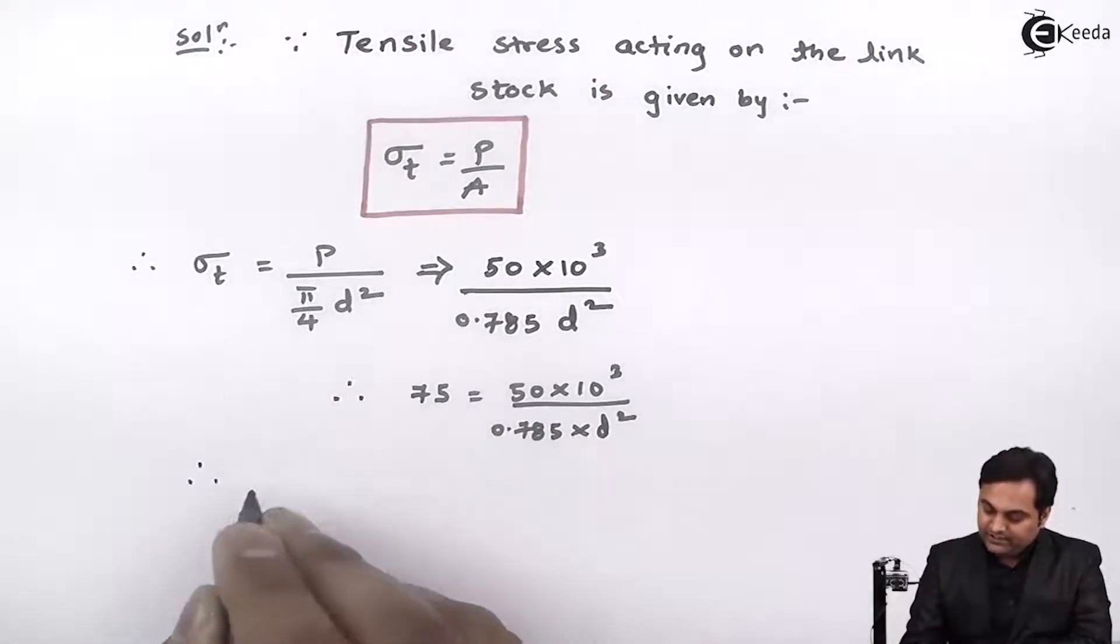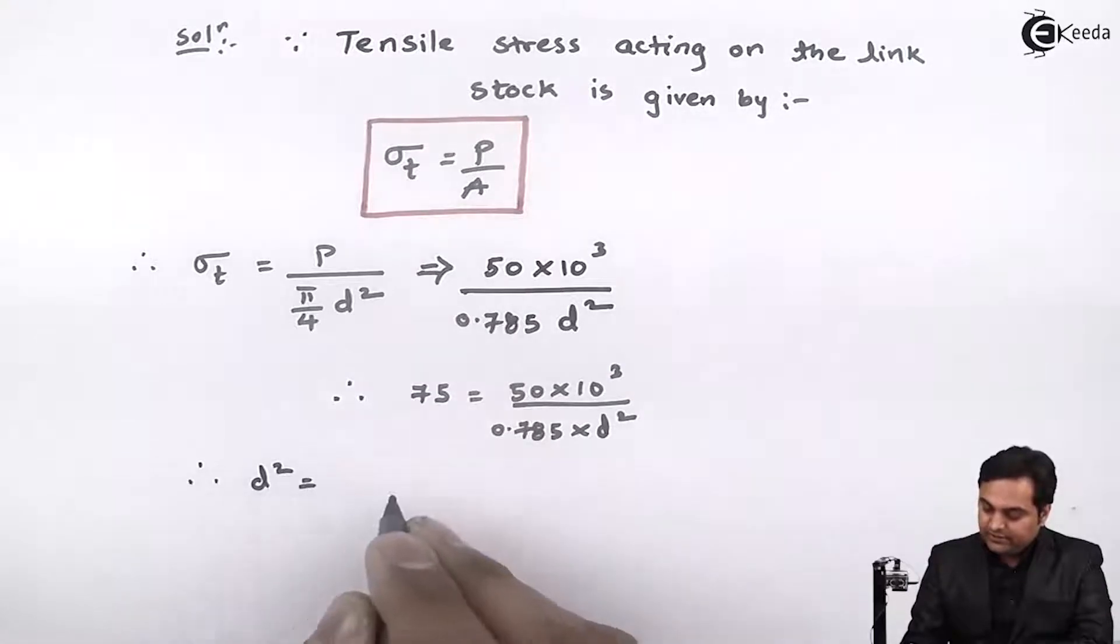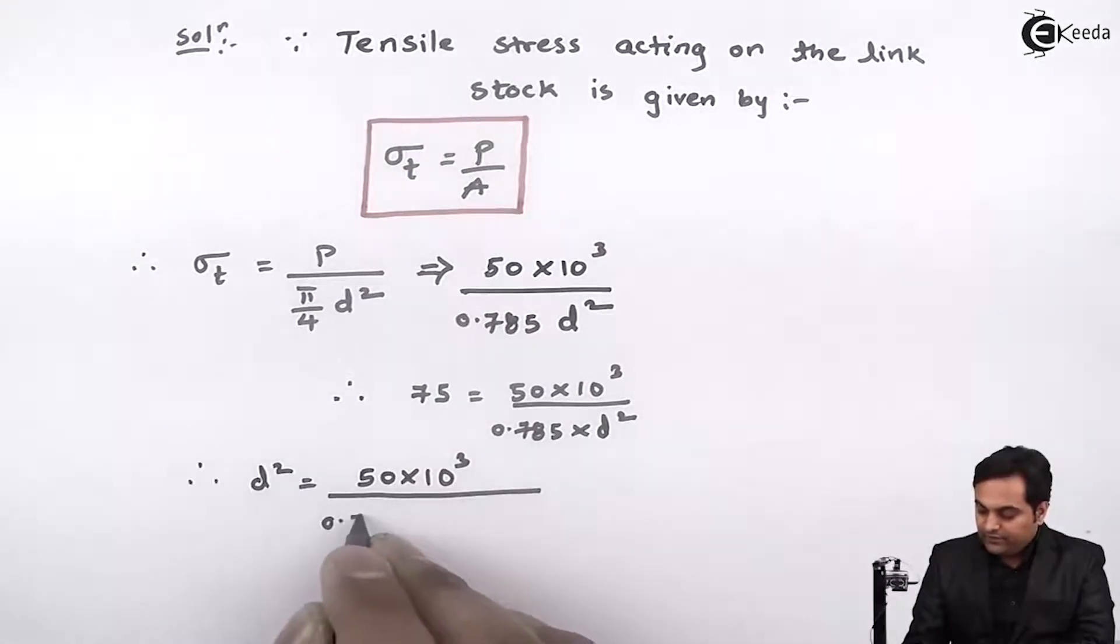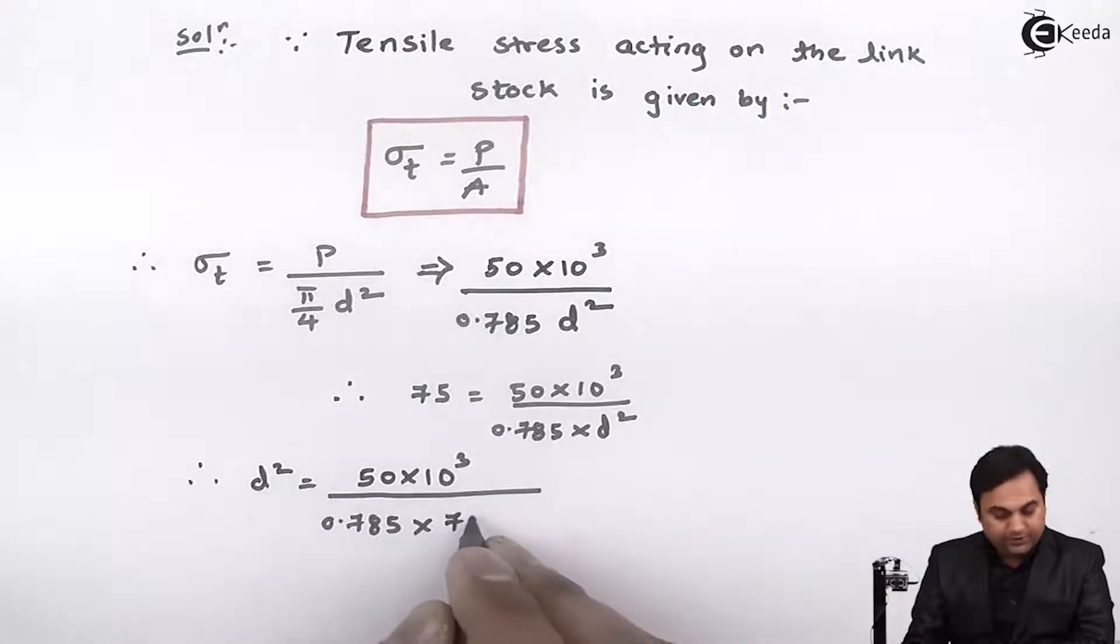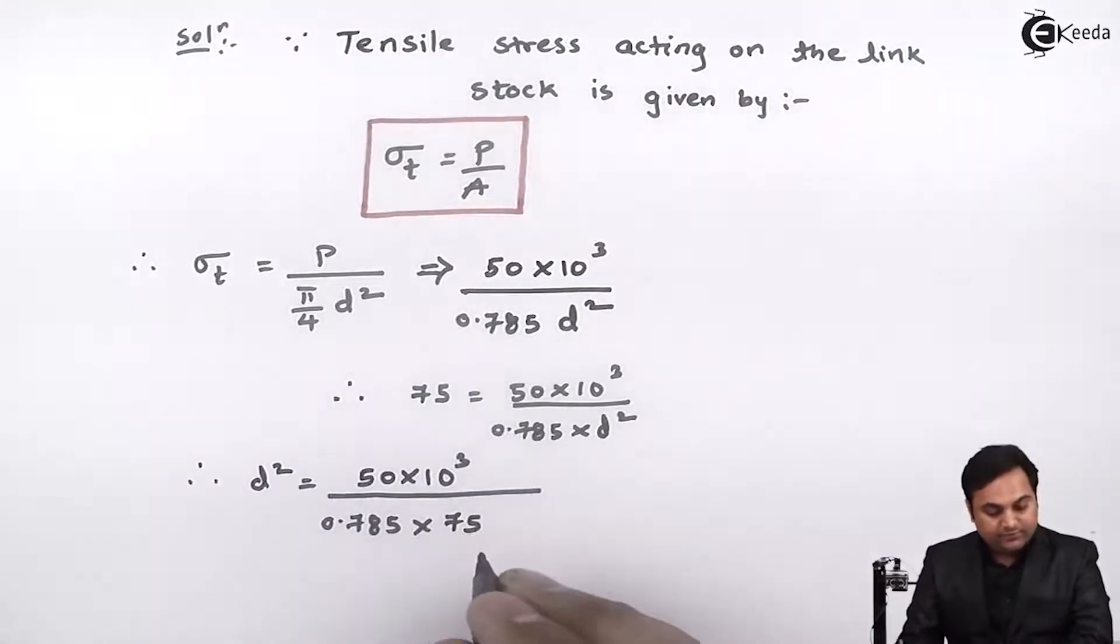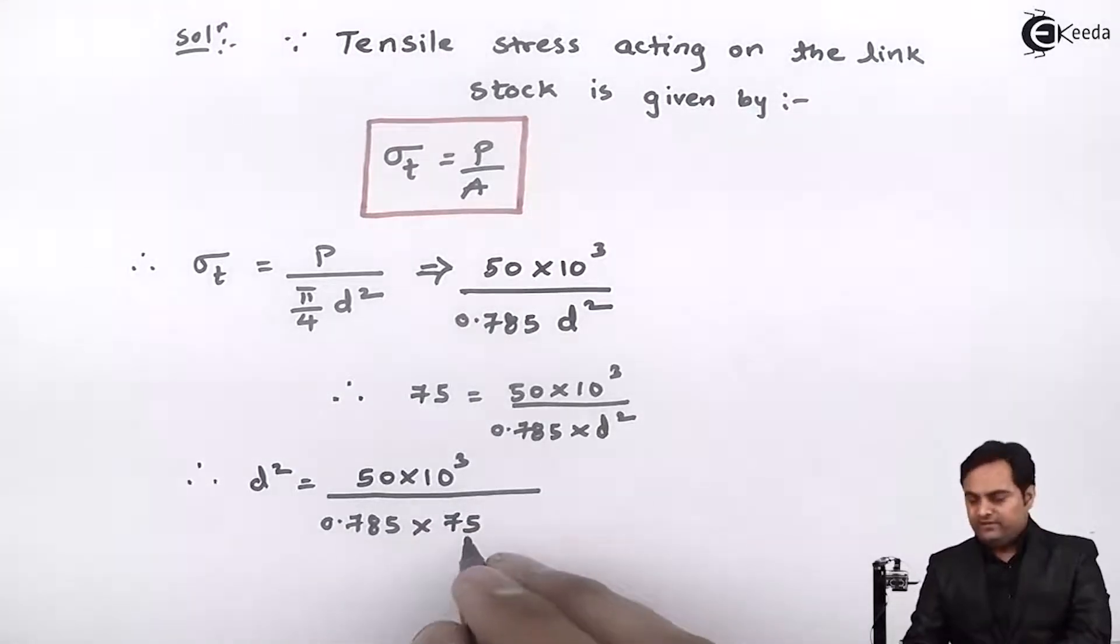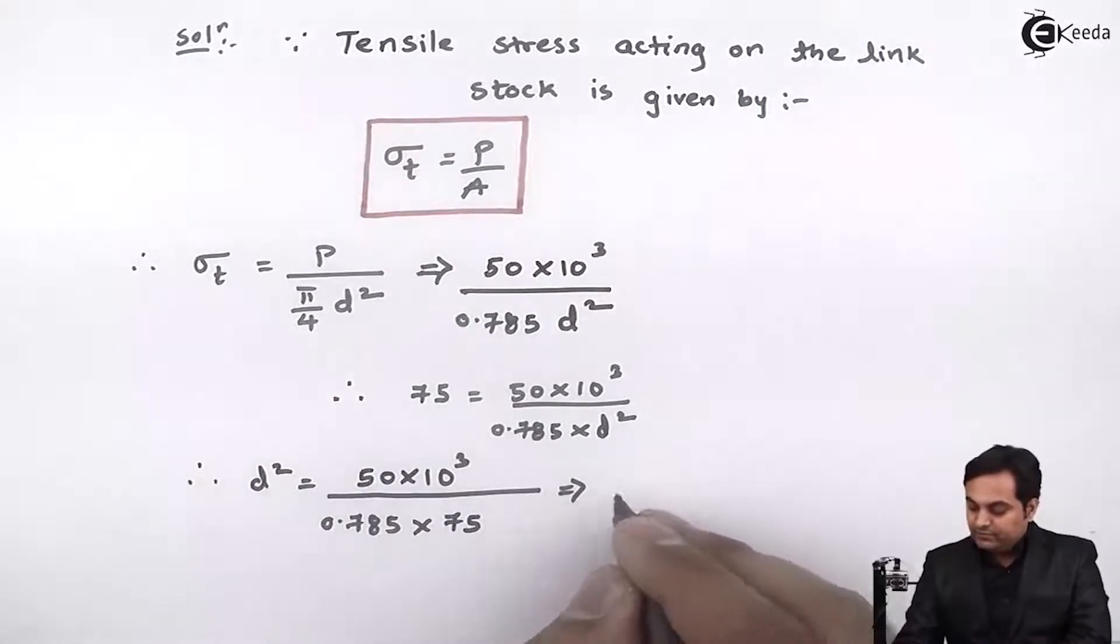So therefore d square I'll shift it onto one side. Here I have 50 into 10 raised to 3 upon 0.785, and 75 will go into the denominator.